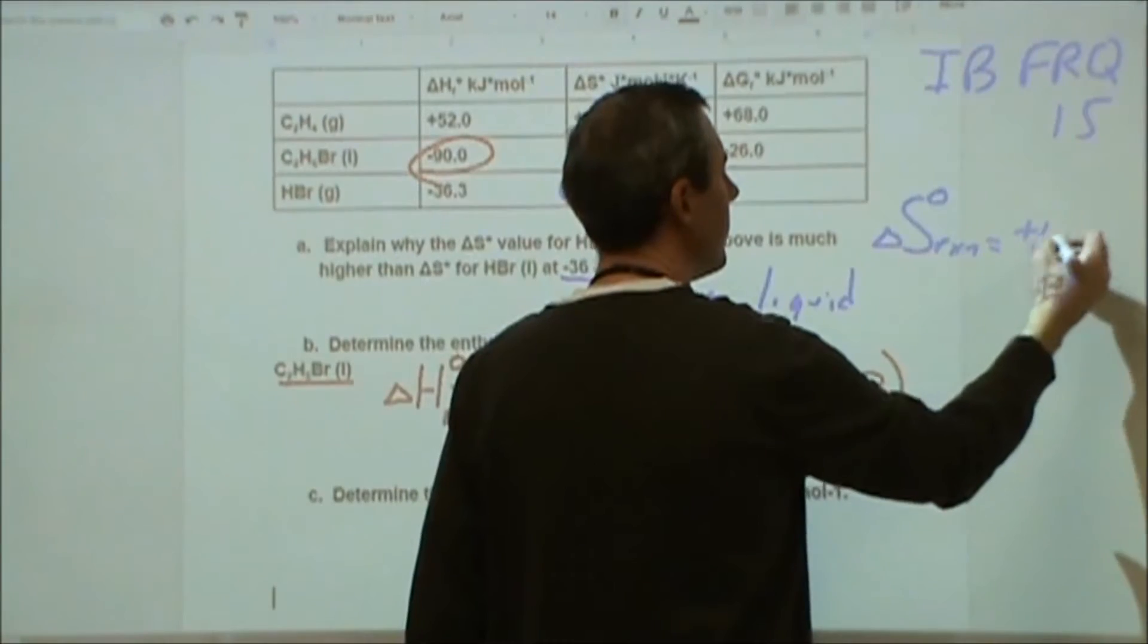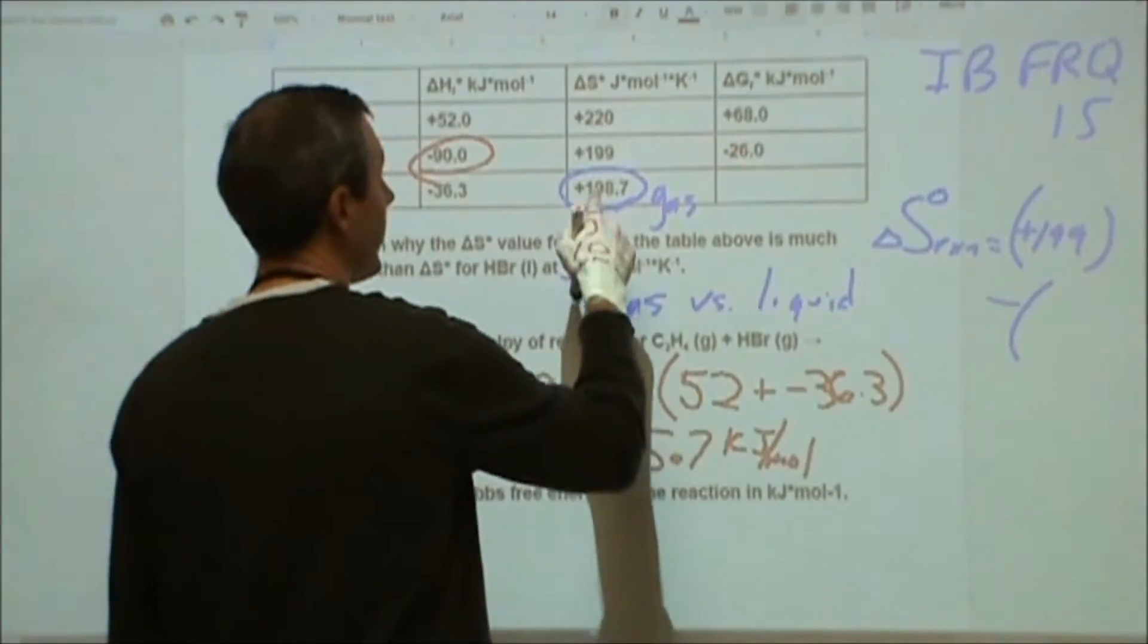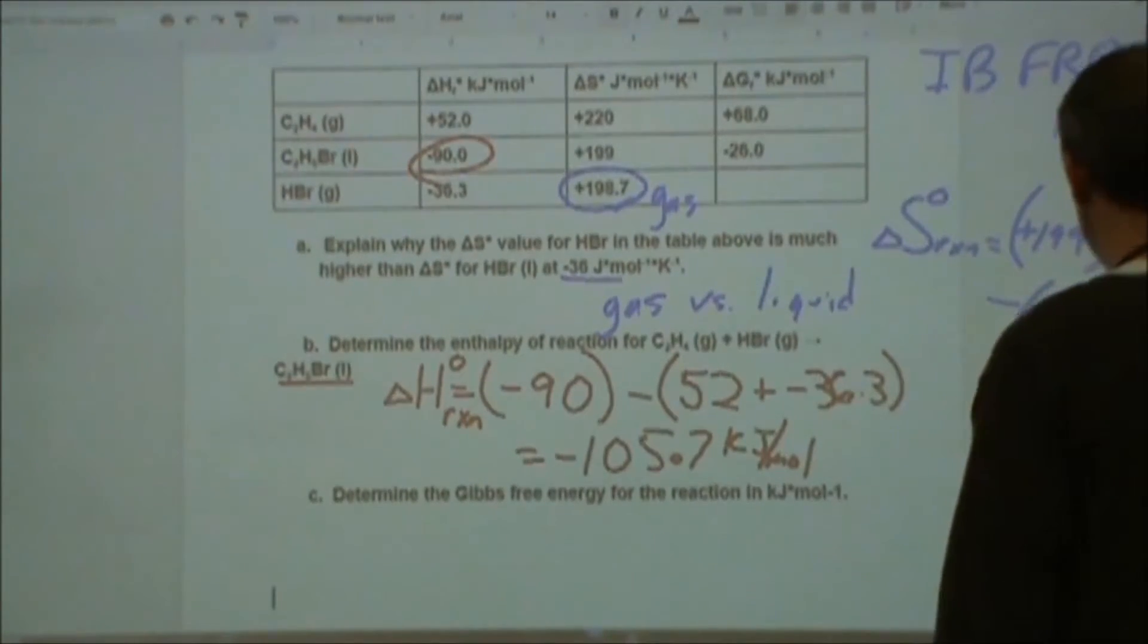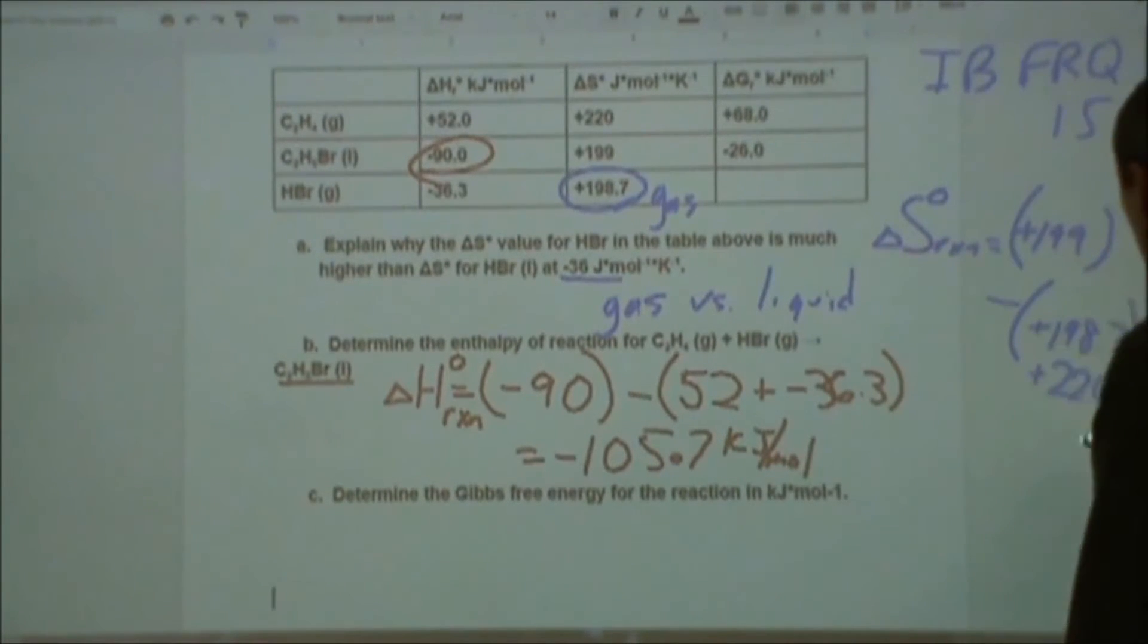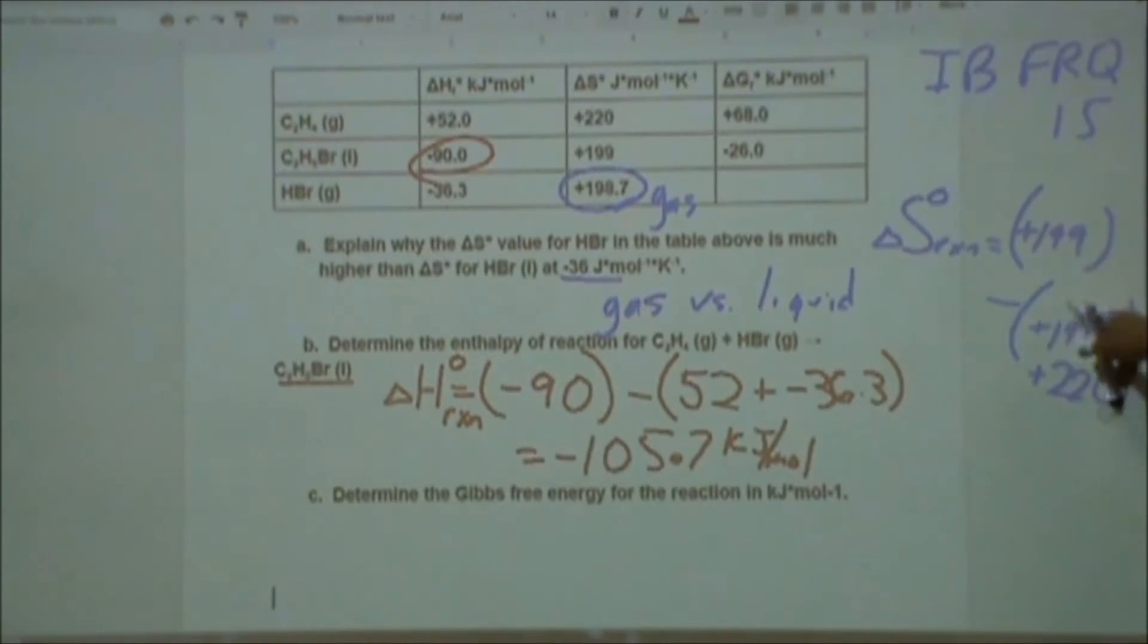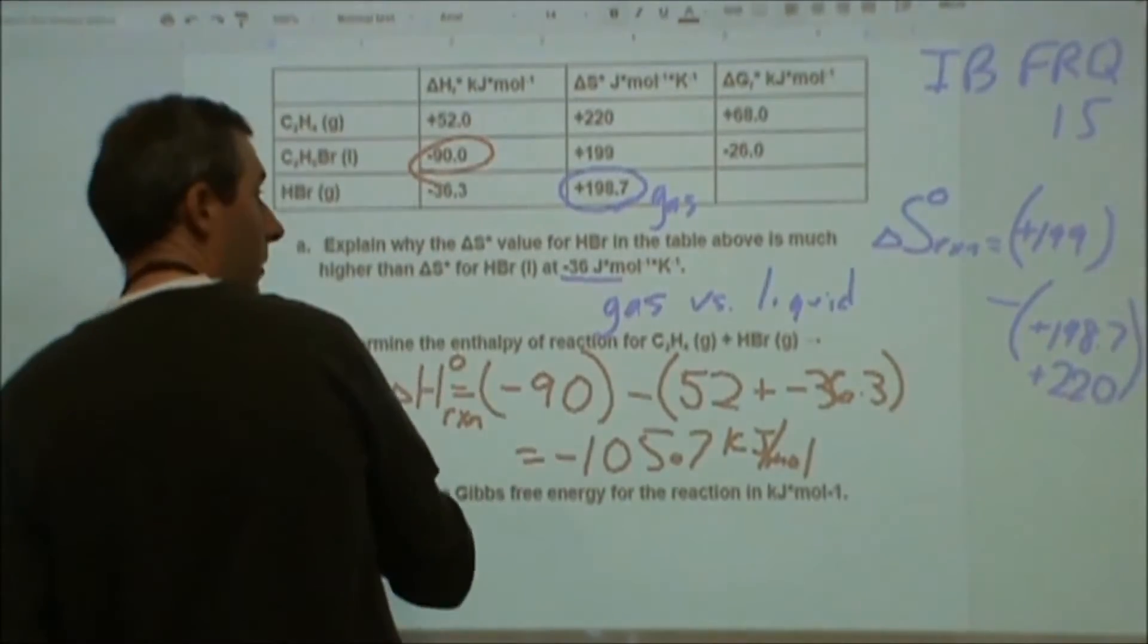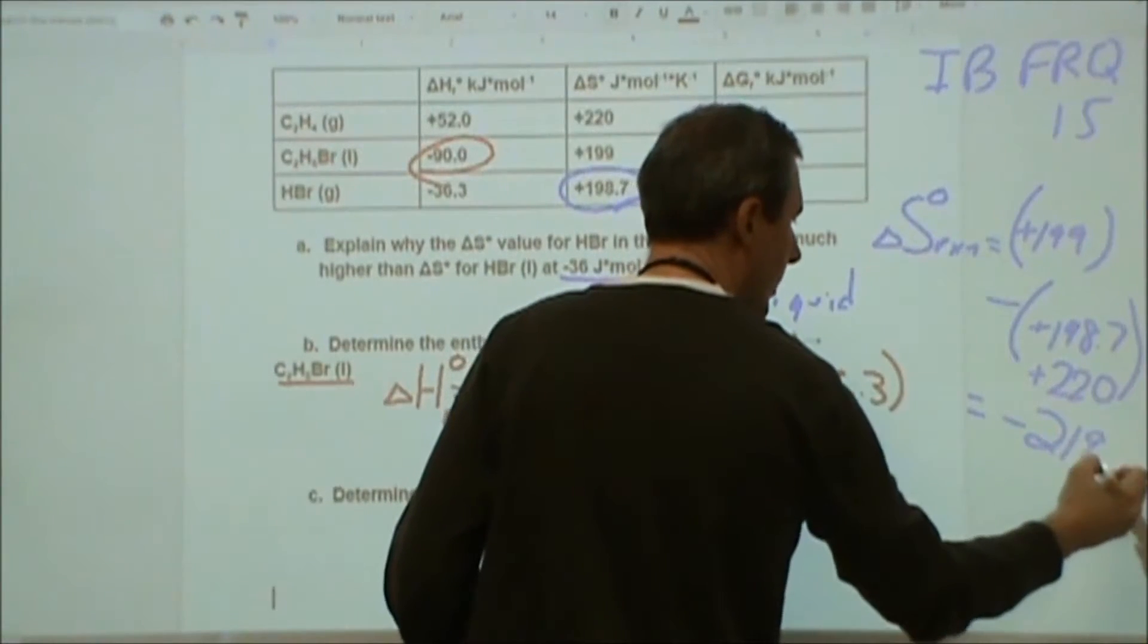That's going to be equal to the same process. We have the product, plus 199, minus the sum of the reactants, which is 198.7 plus this 220. So basically, these two are effectively canceling out. It's going to be plus 0.3, but we're going to add the 220 to that. And we're going to end up with a negative value for the total there. It's going to be negative 219.7.